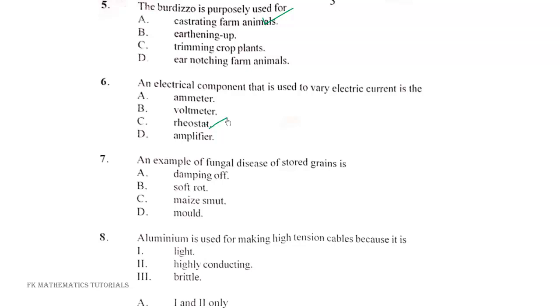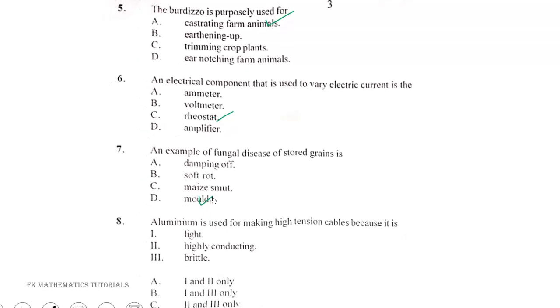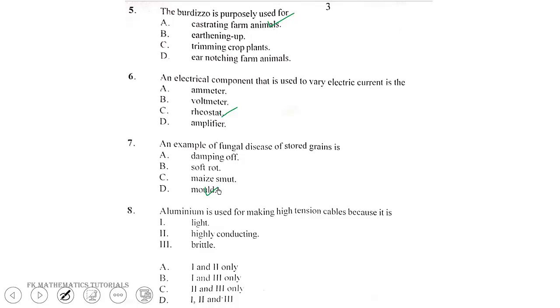Question 7. An example of fungal disease of stored grains is mold. Question 8. Aluminium is used for making high tension cables because it is light and highly conducting. So the correct answer should be I and II only.